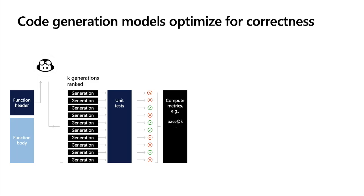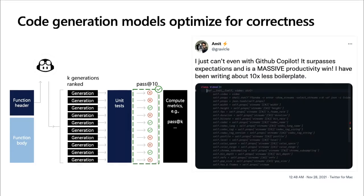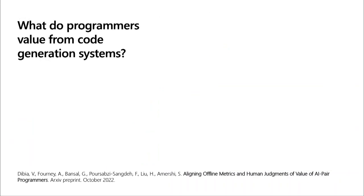A standard metric is pass@K: if you look at pass@2, none of the top 2 pass — failure; pass@10 — success. But when people talk about these code generation models, they're not really talking about correctness — they're talking about the impact on productivity and the effort saved when interacting with them. So we asked: what do programmers really value from these systems?